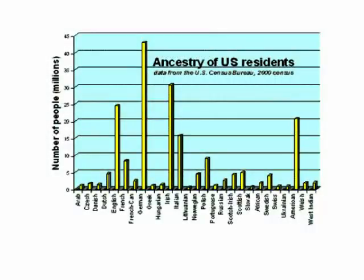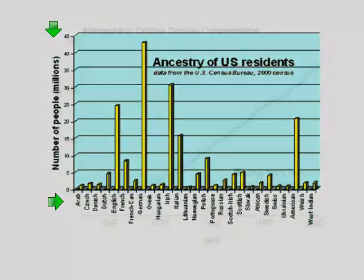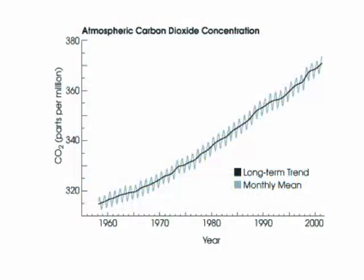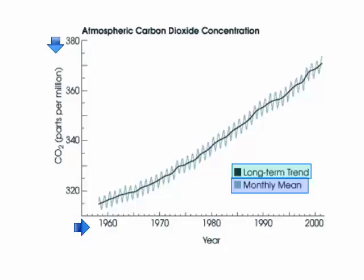If you see graphs or bar charts like this one, remember that you must pay strict attention to each axis and see what's being interpreted or represented. We want to see what's being compared on each of the axes and what's being represented in the graph. Here we're measuring atmospheric carbon dioxide concentration over time, taking into account the long-term trend versus the monthly mean, since there's a great deal of fluctuation in the monthly mean.